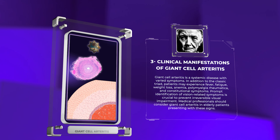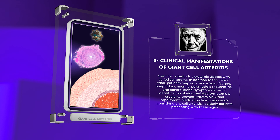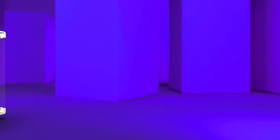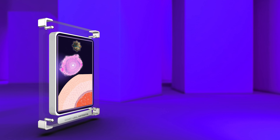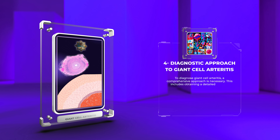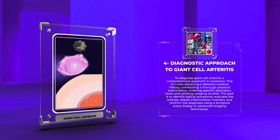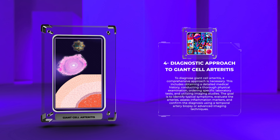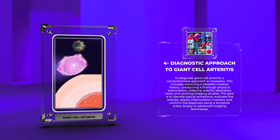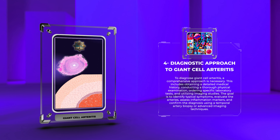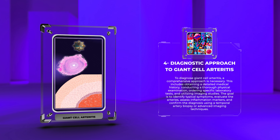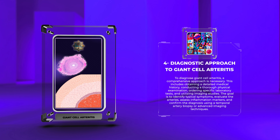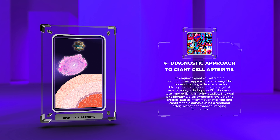To diagnose giant cell arteritis, a comprehensive approach is necessary. This includes obtaining a detailed medical history, conducting a thorough physical examination, ordering specific laboratory tests, and utilizing imaging studies. The goal is to identify typical symptoms, evaluate the arteries, assess inflammation markers, and confirm the diagnosis using a temporal artery biopsy or advanced imaging techniques.